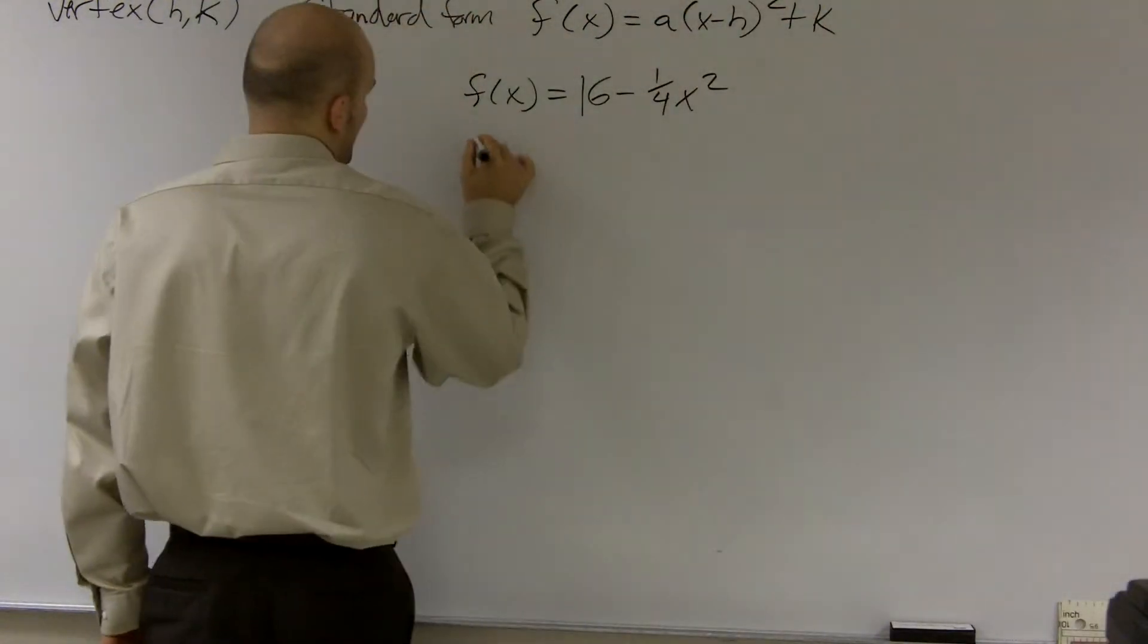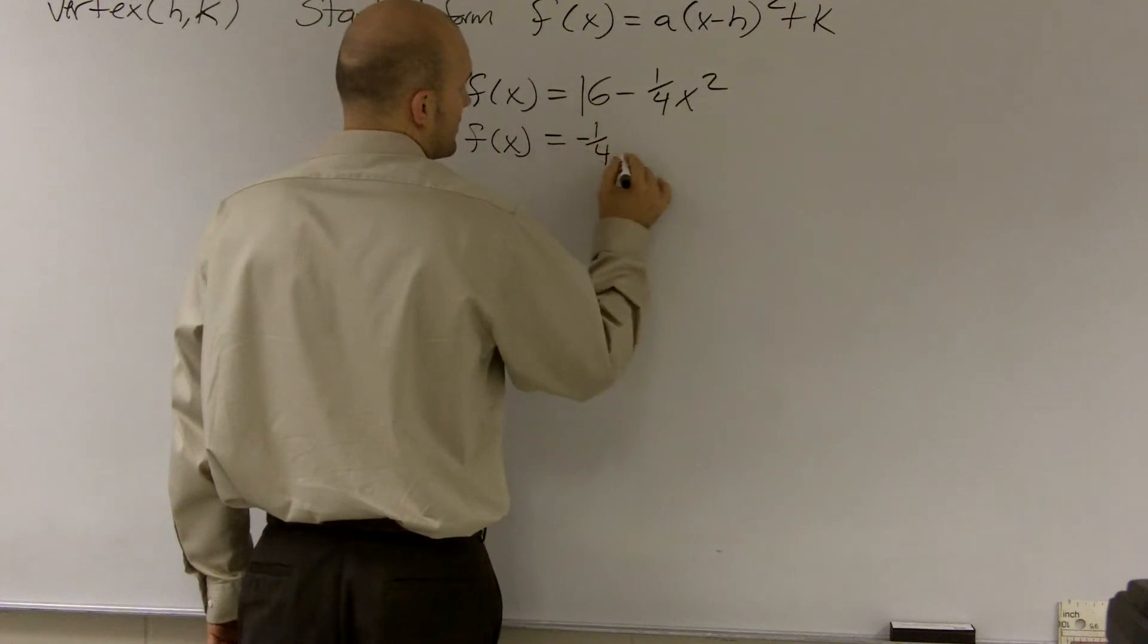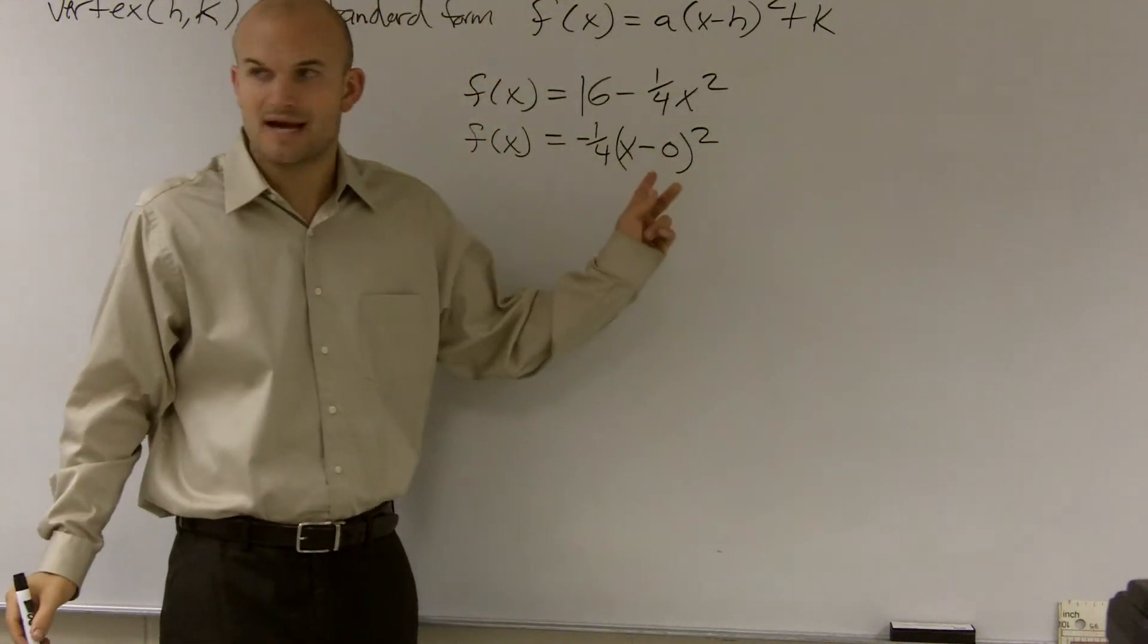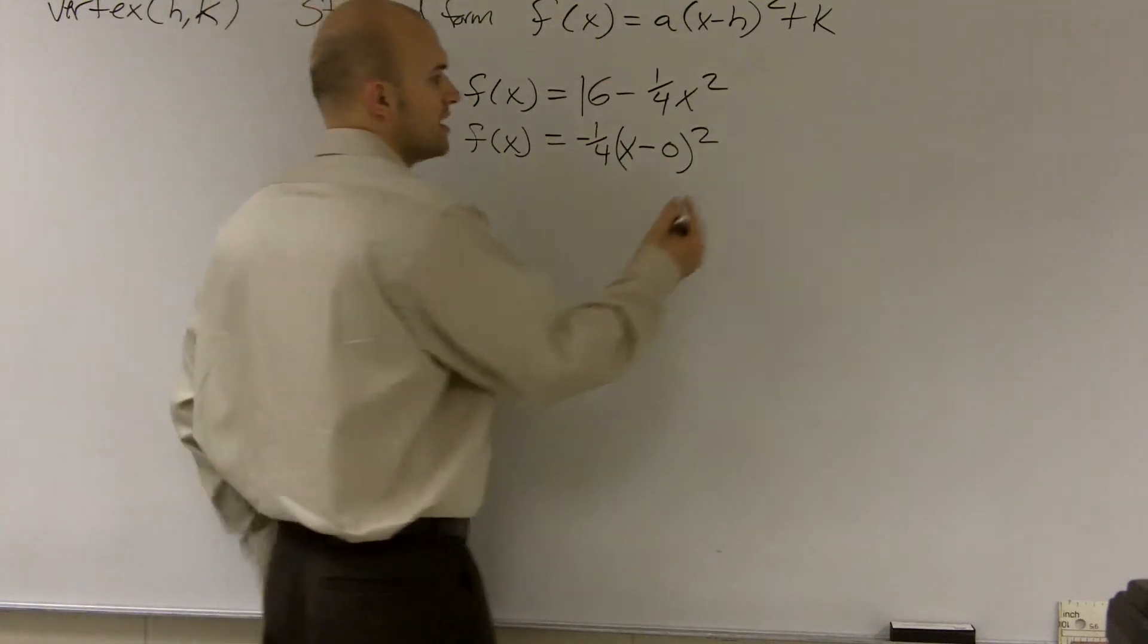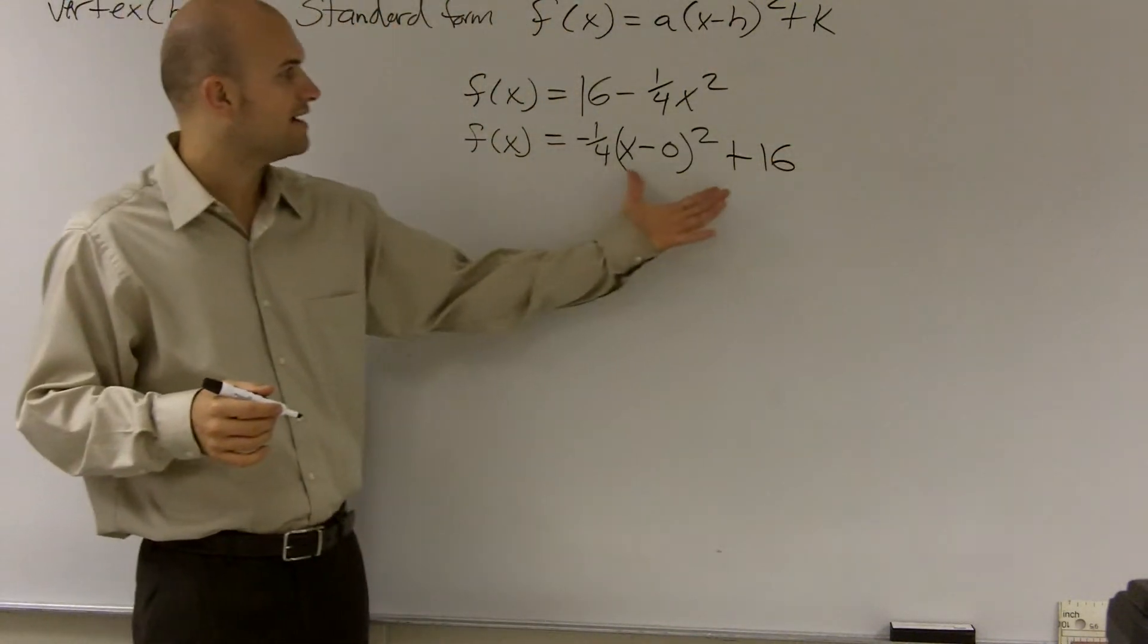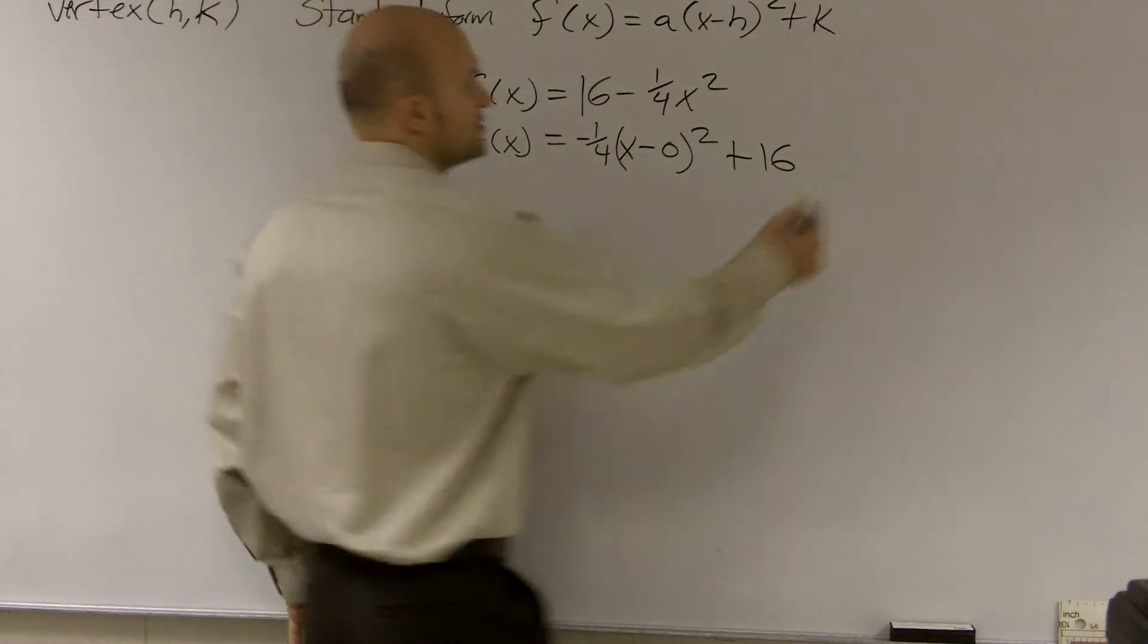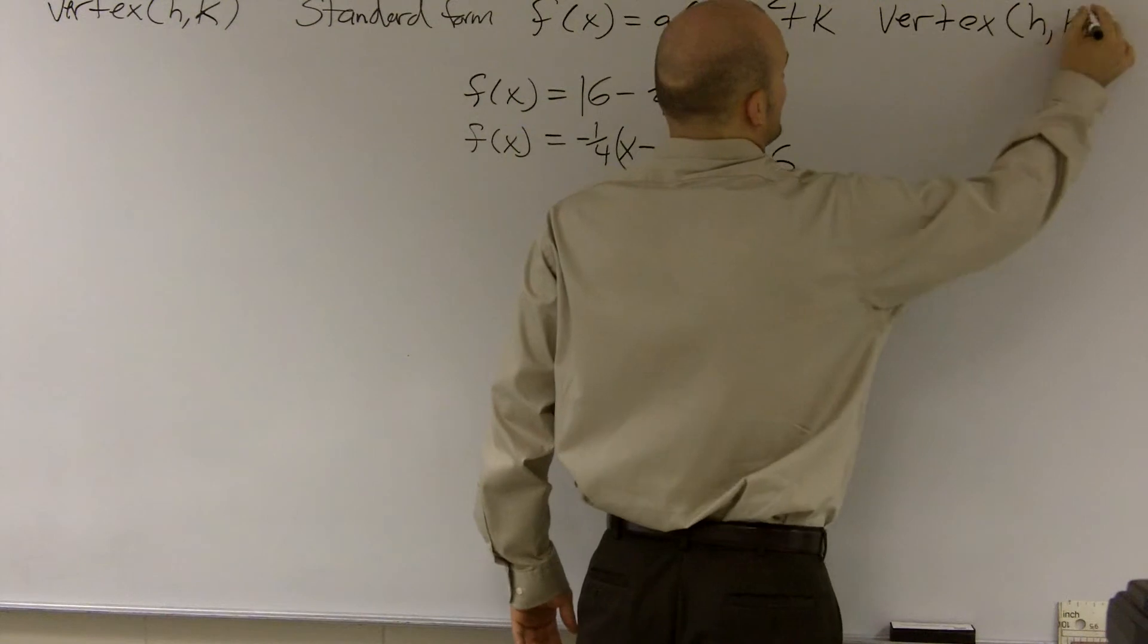So I'm going to write f(x) equals negative one-fourth x, and for this video I'm just going to show an x minus 0 squared. Really, you know x minus 0 is just x, and that gives you x squared. But I'm going to show you the zeros just so you guys can see how that plays with the vertex, plus 16. So now I have transformed this equation into our standard form equation. And the reason why that's so important is because from a standard form, you can determine what the vertex is, where the vertex is h comma k.